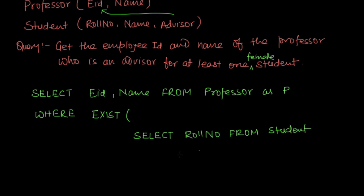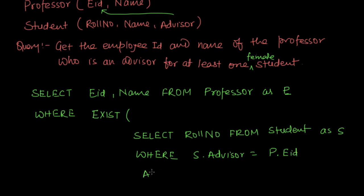Inside the subquery we add conditions: WHERE s.advisor = p.eid. Since we need to check the gender of the student, we also include a sex column in the student relation storing values 'F' or 'M'. We then add the condition AND s.sex = 'F'. This completes the query.